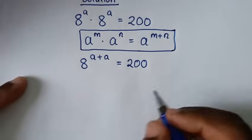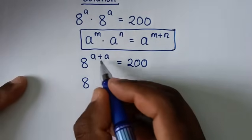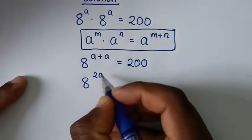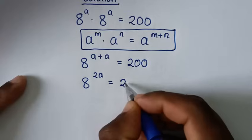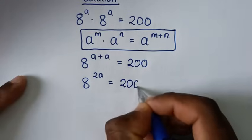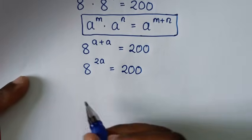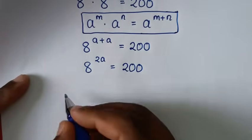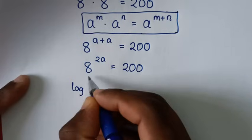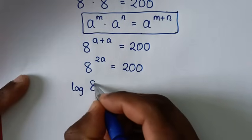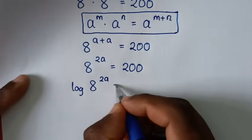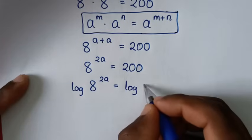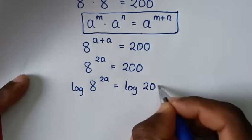Then it will be 8 power a plus a, where a plus a is 2a, so 8 power 2a is equal to 200. Then from here we'll apply log in both sides, so it will be log of 8 power 2a is equal to log of 200.